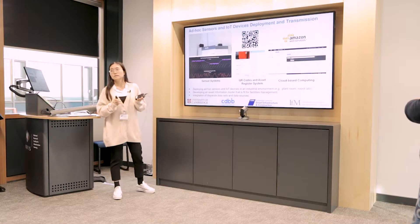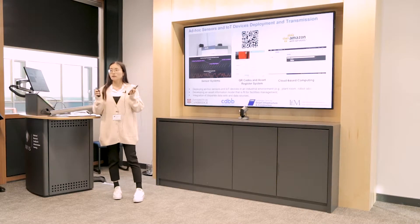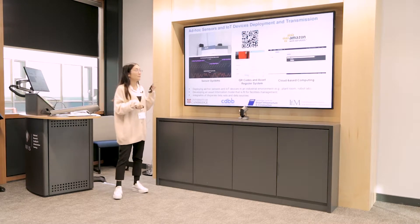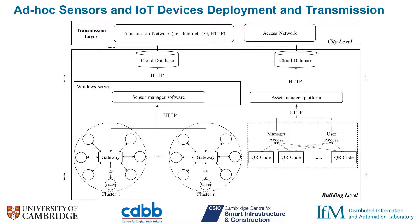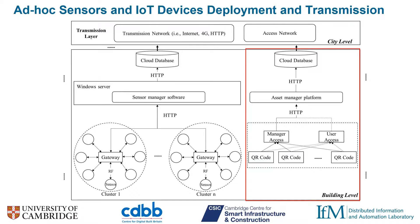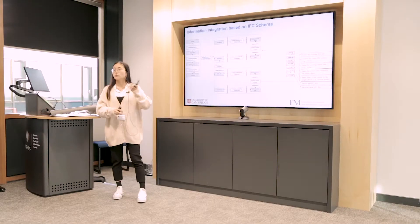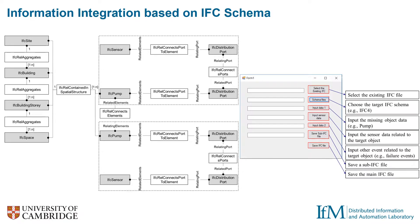All data resources are integrated through a cloud-based platform — we use Amazon Web Services. Two network transmissions have been created: the first connects different sensors, and the second connects QR codes to gather information feedback from users. We use the international data standard IFC as a centralized data model, communicating with several data resources in a distributed way.